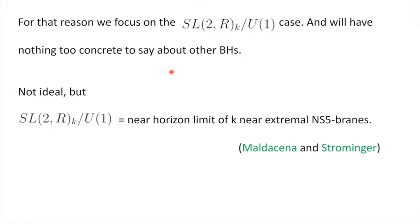This is not ideal — we would like to say something about Schwarzschild black holes — but this model is not bad. It is the near-horizon limit of k near-extremal NS5 branes, which are black holes in 10-dimensional Type IIA string theory. If we can say something very concrete about them, we can conjecture that whatever we find is relevant also for other black holes that we like more.